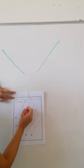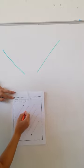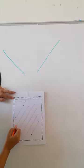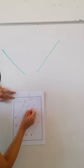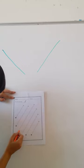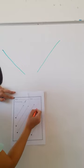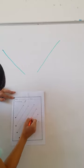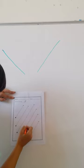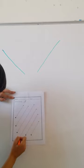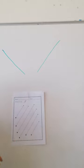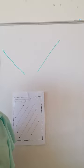Now trace the second line from the arrow and go down. We trace on the dots, we follow the dots, from the arrow down to the bottom. This is a diagonal line.